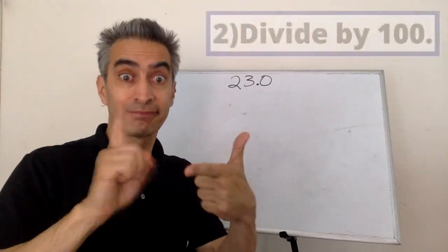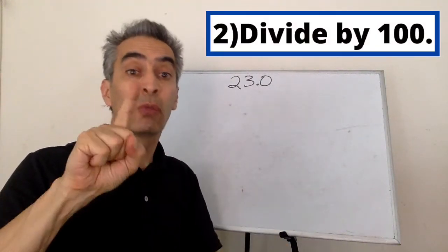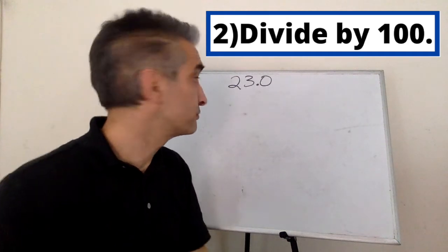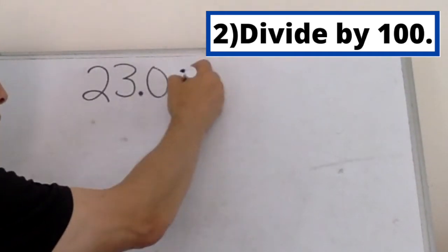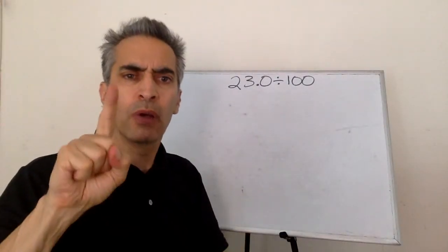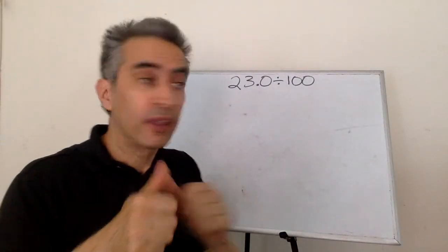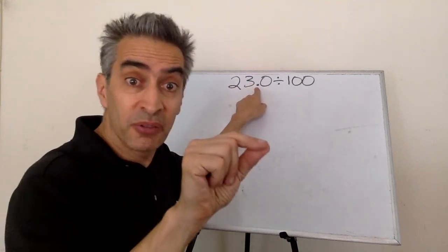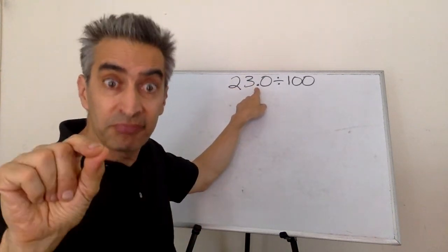The next step, we have to divide this number by 100. How do we divide by 100? We take the decimal place and move it to the left two spaces.